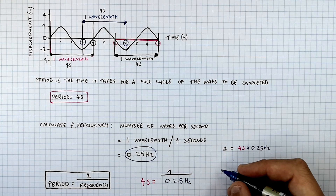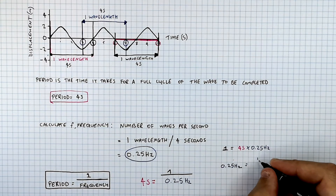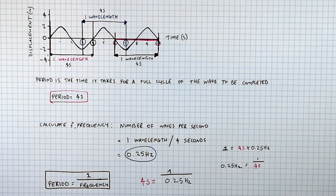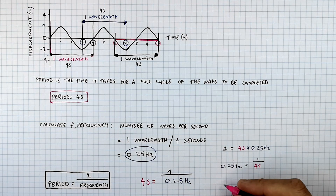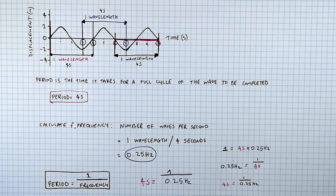Let's now rearrange for the frequency of the wave: 0.25 hertz equals 1 over 4 seconds, which equals 0.25. And rearranging for the period: 4 seconds equals 1 over 0.25, which equals 4. So you can use this equation — period equals 1 over frequency — to calculate the frequency if you have the period, and to calculate the period if you have the frequency.